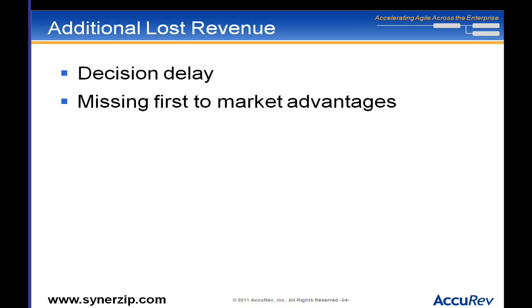A couple more things I don't have a lot of time to get into: decision delay is actually expensive. The cheapest money you can find is to move a project earlier. If you knew three years ago that something was very valuable to do and have only just started it, those three years represent lost revenue opportunity. So look at how to reduce the amount of time it takes to get something started once you've decided it's important.